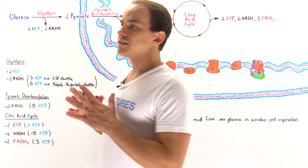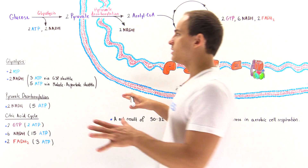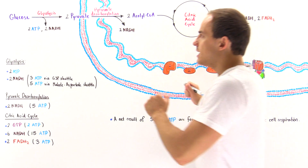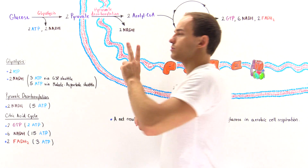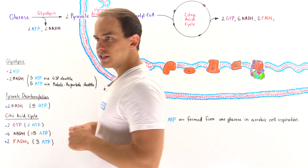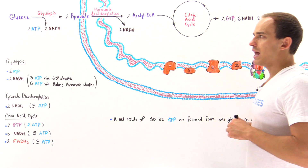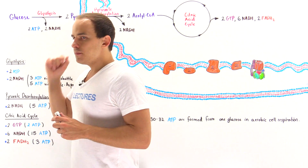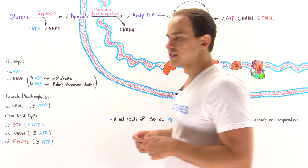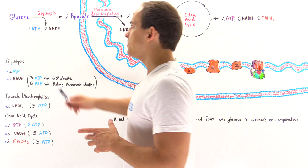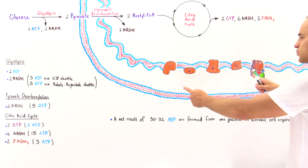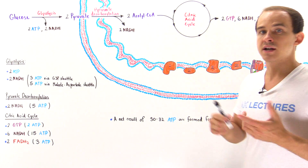Glycolysis takes place entirely in the cytoplasm of the cell. A single glucose is broken down into two pyruvate molecules in glycolysis, and in the process we also generate two ATP molecules and two NADH molecules. The ATP molecules can be used directly by the cell to power biological processes, but to produce ATP from NADH, the NADH must move onto the electron transport chain found on the inner membrane of the mitochondrion.